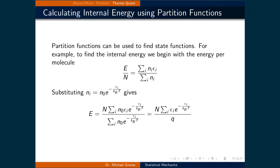Partition functions can be used to find state functions. For example, to find the internal energy, we begin with the energy per molecule being E over N, and that's equal to the sum over i of n_i times e_i divided by the sum over i of n_i.